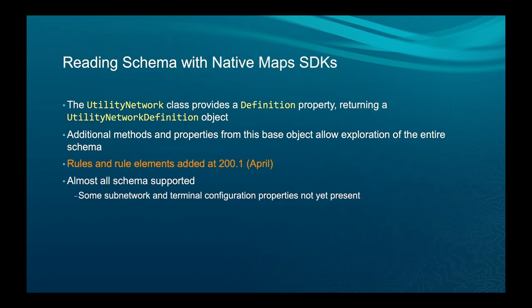With the native Maps SDK, it's very similar — there's a utility network class with a definition class next to it. In the past year we added support for rules and rule elements: structural attachment, connectivity, and containment rules. Some subnetwork properties and terminal configuration properties aren't yet there, but we'll be adding them shortly.